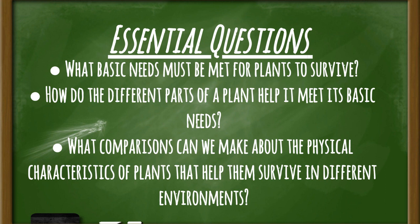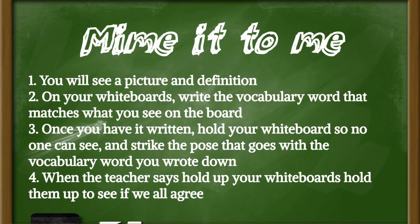It's important that we know certain vocabulary so as we make our observations and final conclusions, we're able to vocalize how we drew those conclusions and tie it back to the material to understand why these plants have different parts to survive in their specific areas. For our review activity, you're going to need to grab your whiteboards and markers.